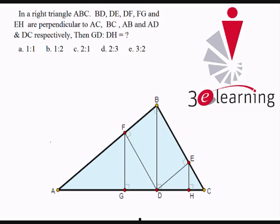FG perpendicular to AD, EH perpendicular to DC, and DF and DE are again the perpendicular. Okay, can you say our points B, F, E, D are nothing but the points of our rectangle.